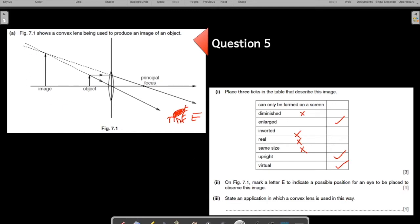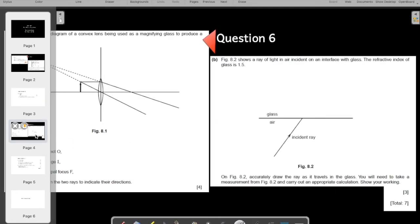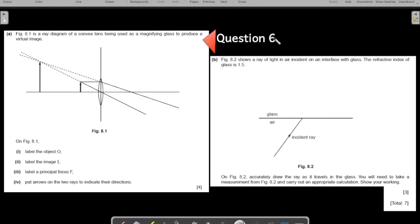Now the third part, state an application in which the convex lens is used this way. Clearly in your magnifying lens. In a magnifying glass, inner lens, eyepiece of a telescope, microscope, binoculars, you can give any one of these as your answer. Let us come to the next question, question number six. In this figure, a ray diagram for a convex lens being used as a magnifying glass to produce a virtual image. Label the object. Obviously you are magnifying any object here, so the object has to be the smaller one. This is your object.